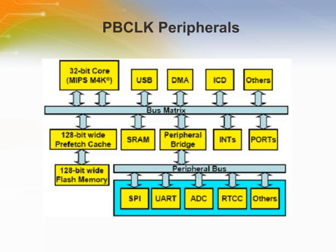Normally, PBCLK peripherals are slow in speed and do not require very high data throughput. When PBCLK is running at 1-to-1 with SYSCLK, the CPU and other bus masters will be able to access PBCLK peripherals in one cycle. As the PBCLK divider gets larger, a read of the PBCLK peripheral will take as many clocks as the divider value.